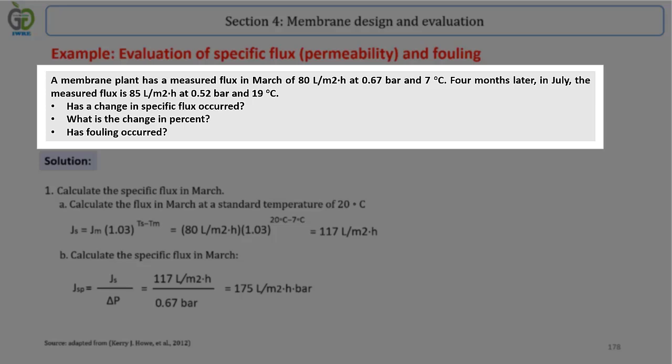Four months later, in July, the measured flux is 85 liters per square meter in hour at 0.52 bar and 19 degrees Celsius temperature.